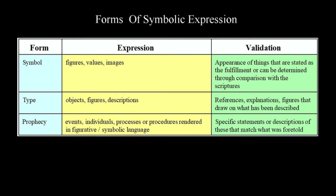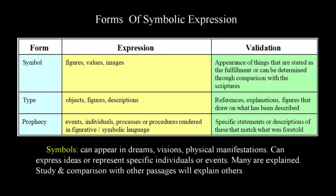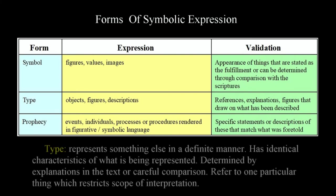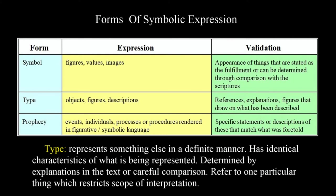This chart describes each of these, so let's review it. Symbols: a variety of elements appear in the scriptures and represent a number of things. These can appear in dreams, visions, physical manifestations, etc. They can express ideas or be related to specific individuals or events. Many of these are explained at some point or can be determined by study and comparison with other passages. Types: this is a form of symbolism that represents something else in a definite manner. A type is an element that possesses the nature or characteristics of that which it represents. This can be determined by detailed explanations in the scriptures or by means of comparison. Types are limited in nature, referring to one particular thing, which restricts application to general ideas.